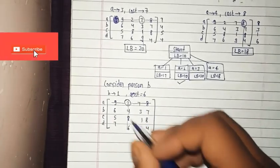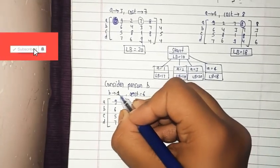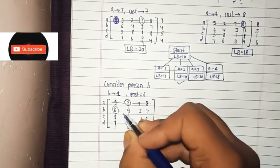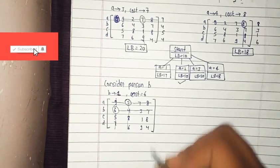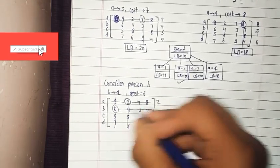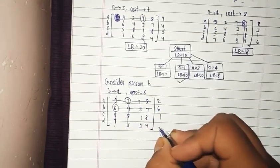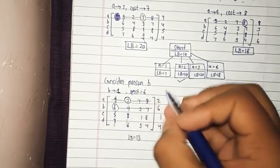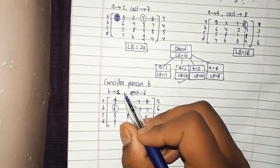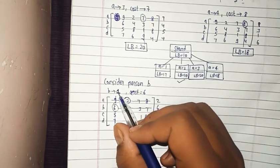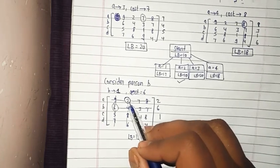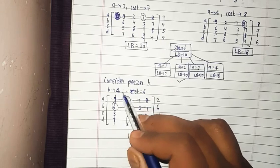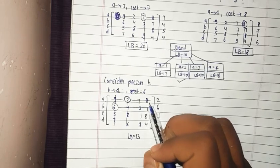Person A's row is removed. For person B assigned to job 1, the corresponding row and column are cut. The minimums are 2, 6, 1, and 4, giving LB equal to 13. We skip job 2 since it has already been assigned to person A.